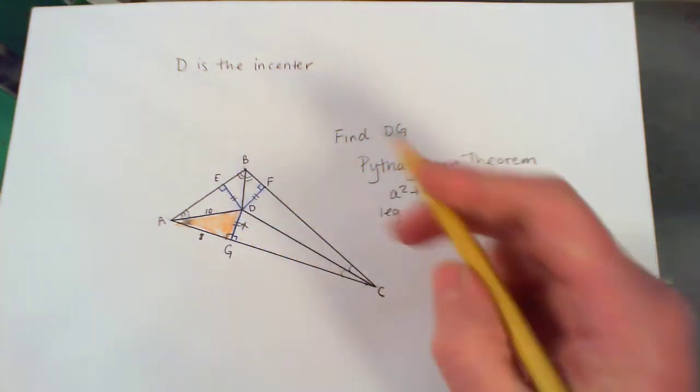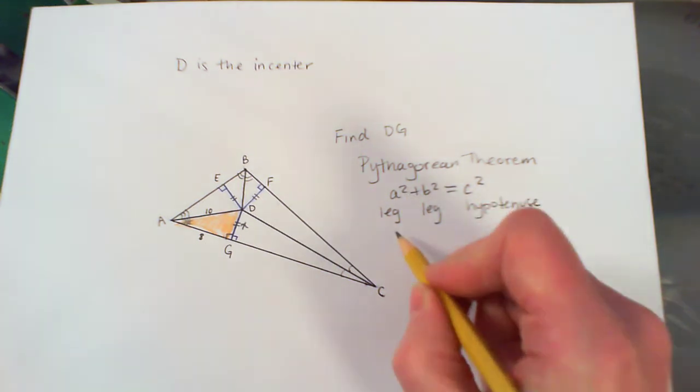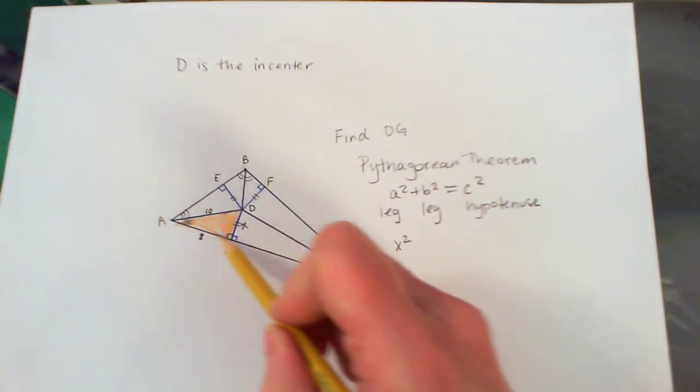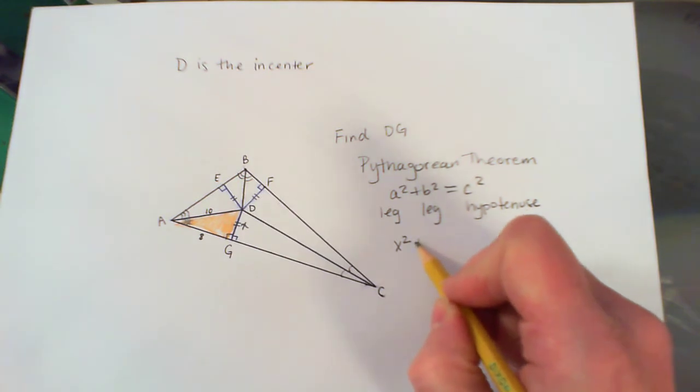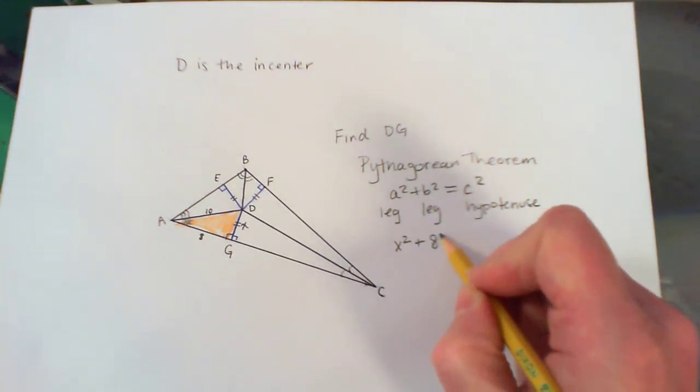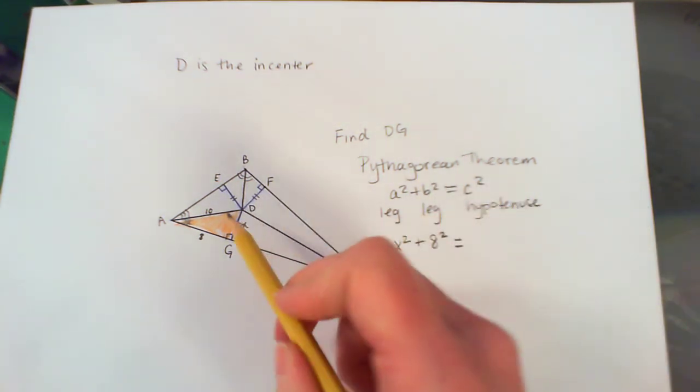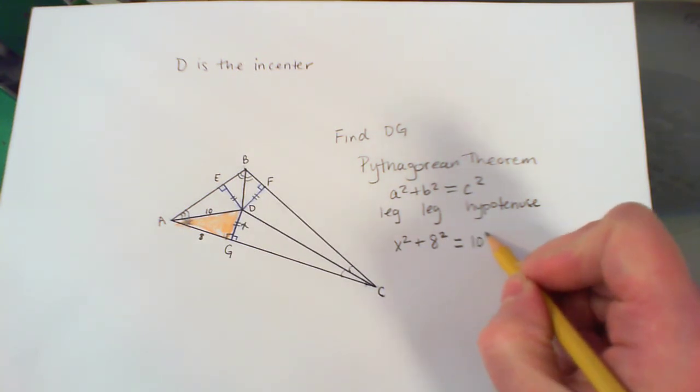So X is a leg, so instead of having A squared, I'm going to write X squared. 8 is another leg, so I'm going to add, instead of B, I'm going to do 8 squared. And then C is the hypotenuse, so I'm going to fill that in with 10 squared.